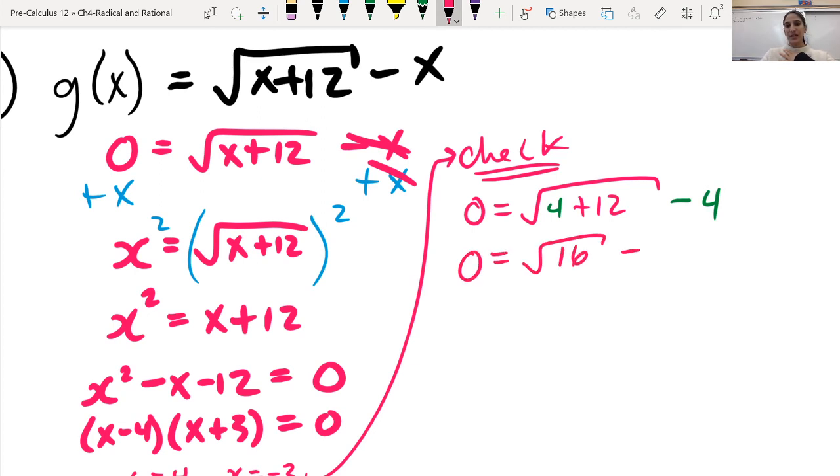So 0 equals 4 plus 12. So that's just going to be root 16 minus 4. Square root of 16 is 4. So 4 minus 4 does give us 0. So I can accept this as my solution.